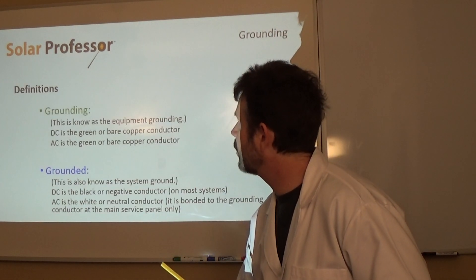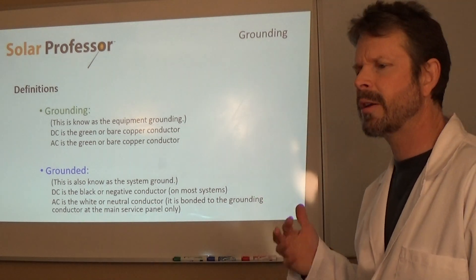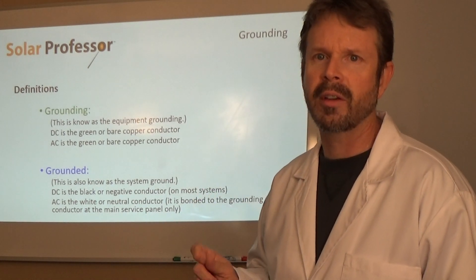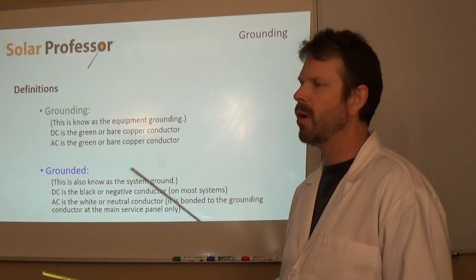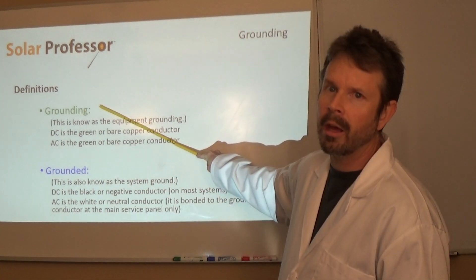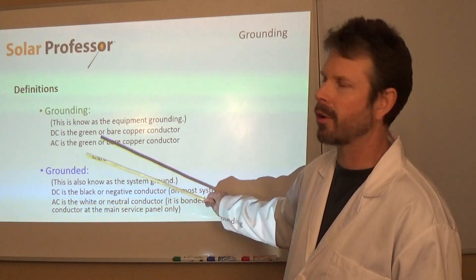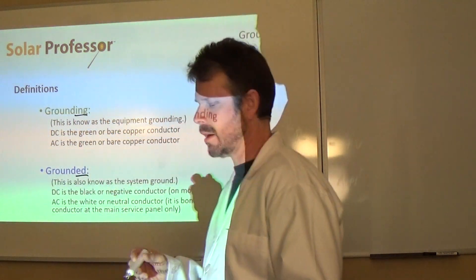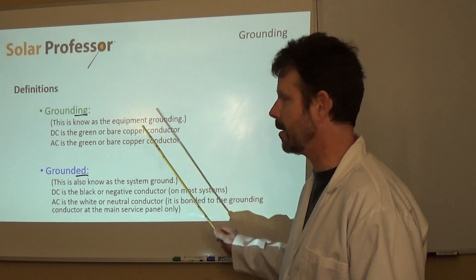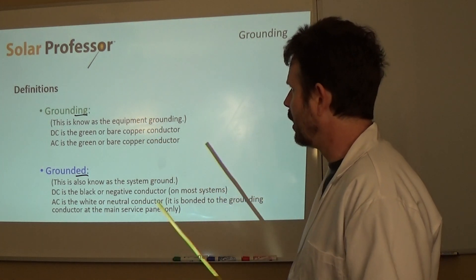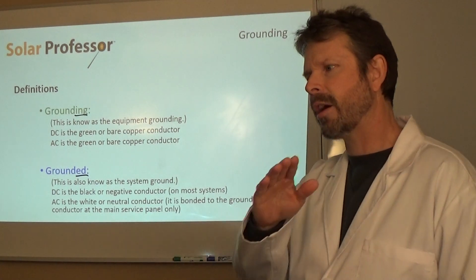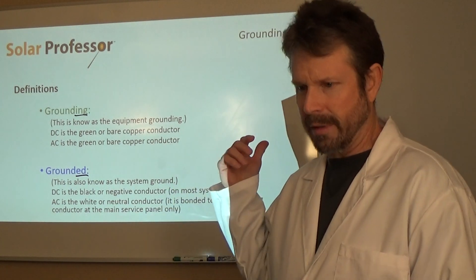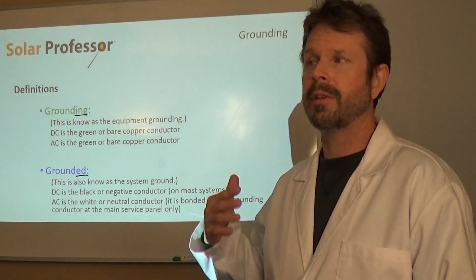Next are my definitions. Definitions are super important. If you're taking a NABCEP exam, I would go ahead and write these down. What you need to know in particular is grounding versus grounded — that's why I have them in different colors. Grounding with ING versus grounded with ED. Very important. Grounding is the equipment ground. It's basically the wire that goes through your entire system and touches all of the metal parts.